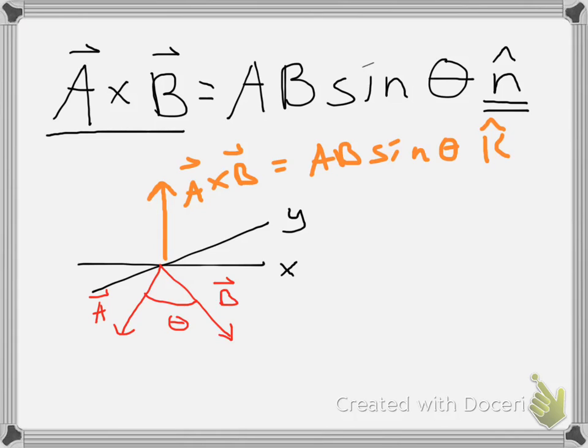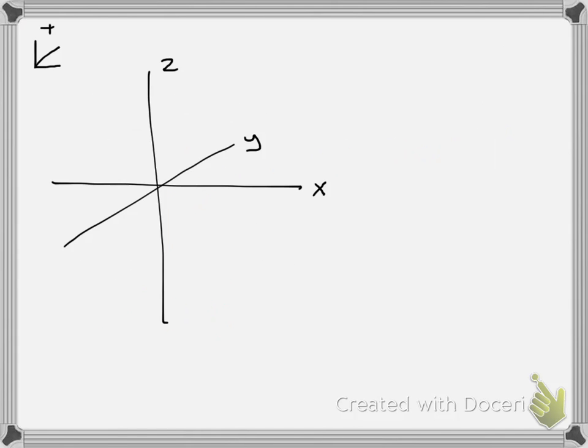All I've done here is I've replaced my general N hat with my specific K hat in this case. N is a general term, and if we're in Cartesian coordinates, we're going to be dealing with K hats. The idea is that it's some vector that's normal or orthogonal to the plane formed by A and B. Now if you consider what this does to our unit vectors, a very interesting thing comes about for calculating the cross product.